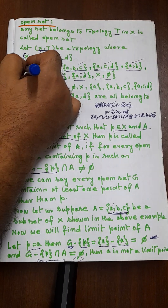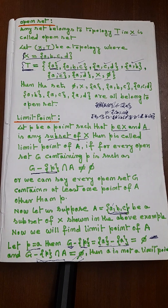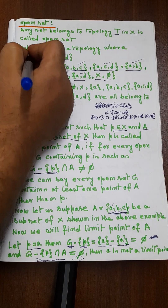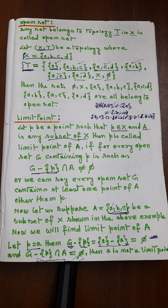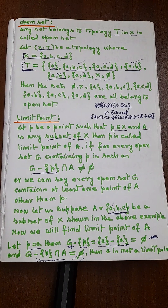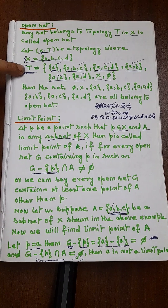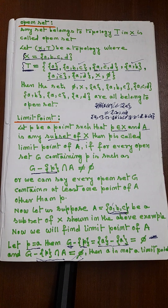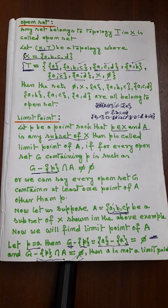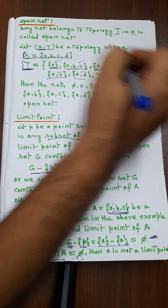We can say T is a topology because T satisfies the three axioms of topology that I showed in the last video. You can verify that — go to my previous video, understand what topology is and what axioms should be satisfied. There are three axioms. Check and verify whether T is a topology or not. T is a topology, and every set belonging to that topology will be called an open set. So all of these are open sets.